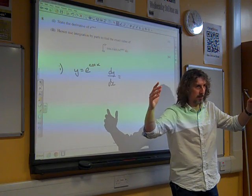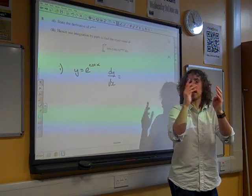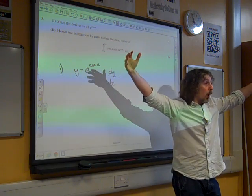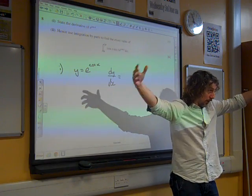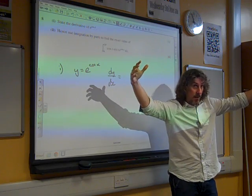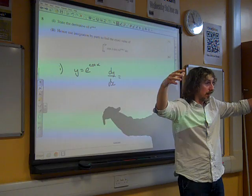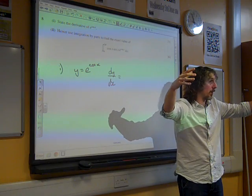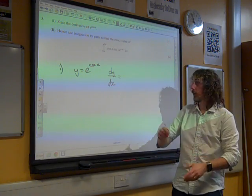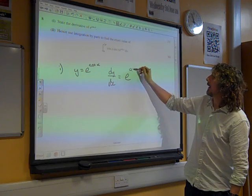And so, if it's a chain rule, if it's a function of a function, we differentiate the whole thing, so it's the big bear, which would be e to the something. And if you differentiate e to the something, you always get e to the something. So, that bit isn't going to change. So, we start with e to the cos x.